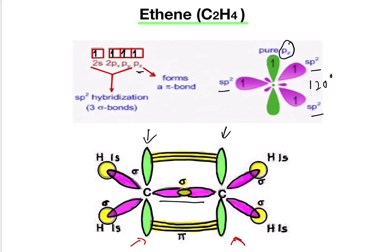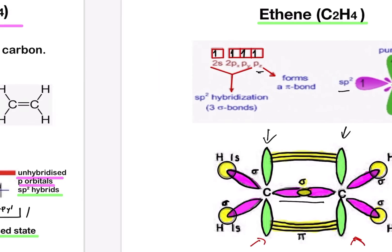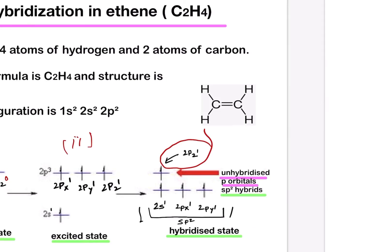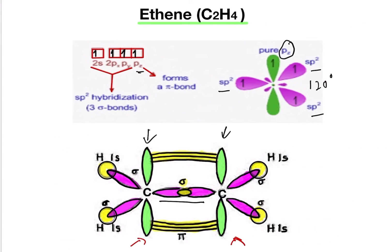A pi bond is formed by the unhybridized 2pz orbitals of each carbon atom. So there is formation of a sigma bond and a pi bond between the two carbon atoms. The sigma bond is one, and then we can see the pi bond as well.